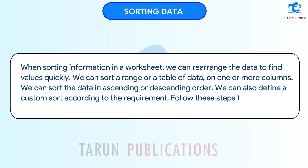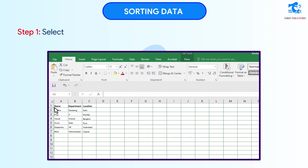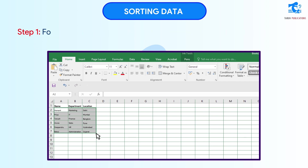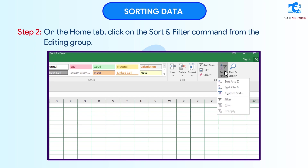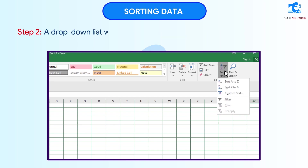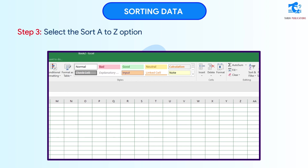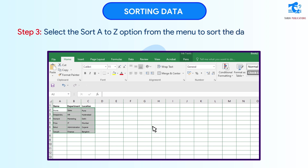Follow these steps to sort data in Excel 2016. Step 1: Select a column or a range of data that is to be sorted. For example, we have selected the range A2:C7. Step 2: On the Home tab, click on the Sort and Filter command from the Editing group. A drop-down list will appear. Step 3: Select the Sort A to Z option from the menu to sort the data in ascending order, alphabetically.